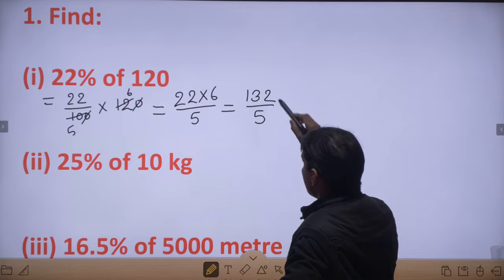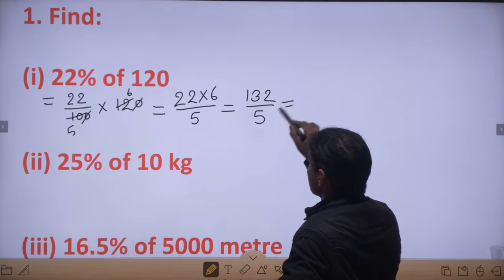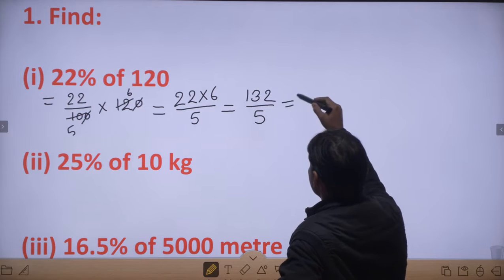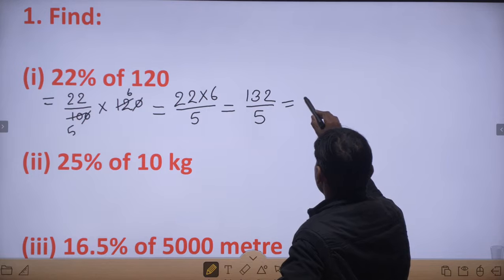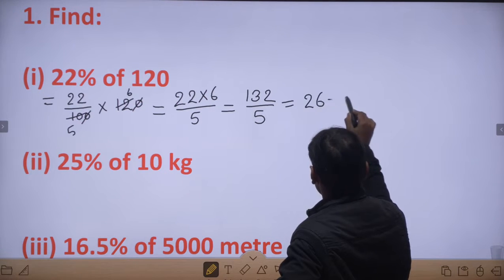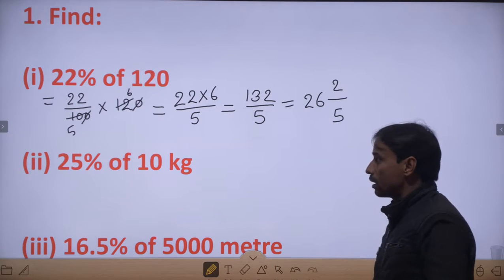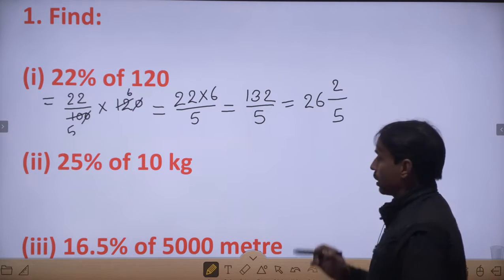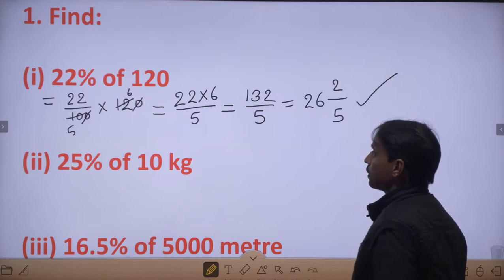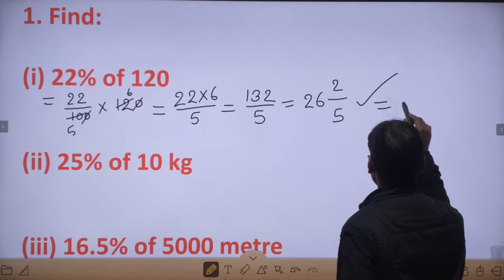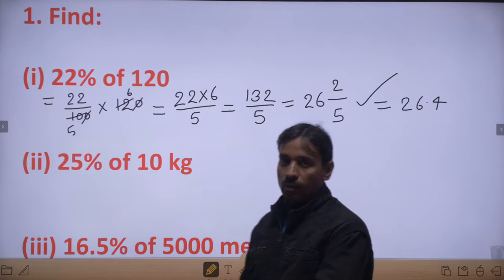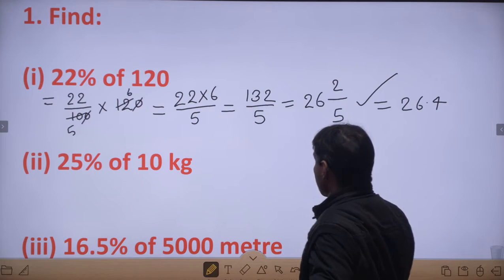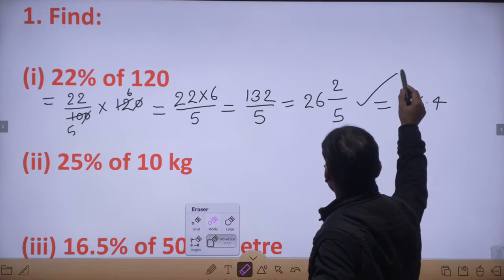It means 132/5. अब इसे mixed fraction में change करें तो 26 whole 2/5 होगा। Decimal form में change करना है तो 26.4 हो जाएगा। तो 26.4 आपका answer हो गया — दोनों में से कोई भी आप answer कर सकते हो। Clear है?